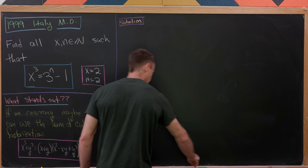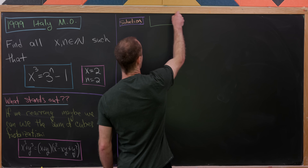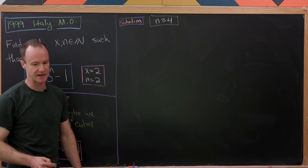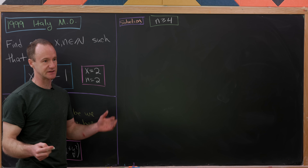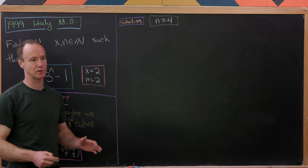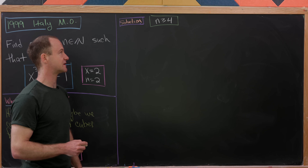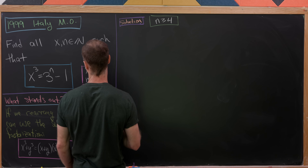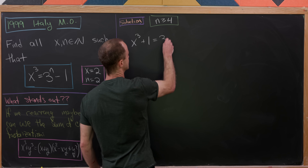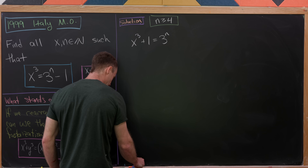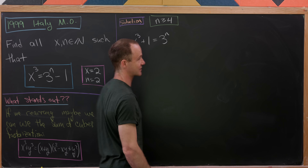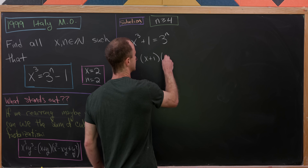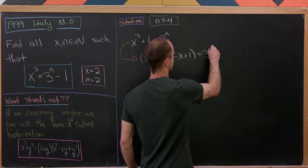We can assume that n ≥ 4, since we've checked the first three cases. We rewrite the equation as x³ + 1 = 3ⁿ, and factor the left-hand side using the sum of cubes: (x + 1)(x² - x + 1) = 3ⁿ.